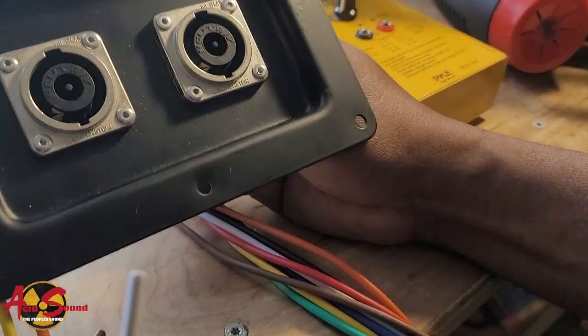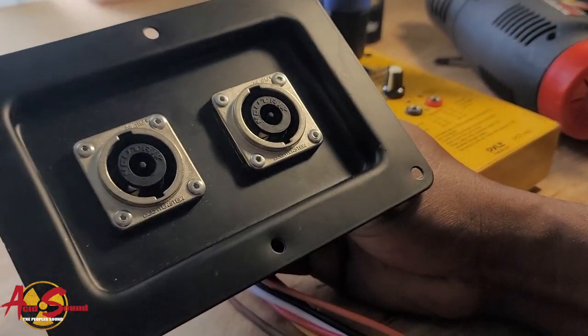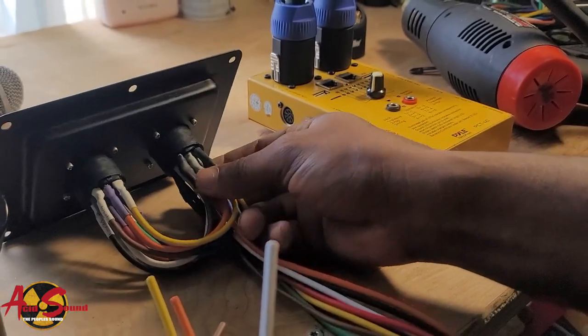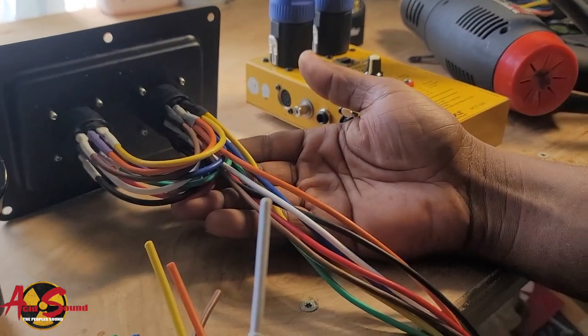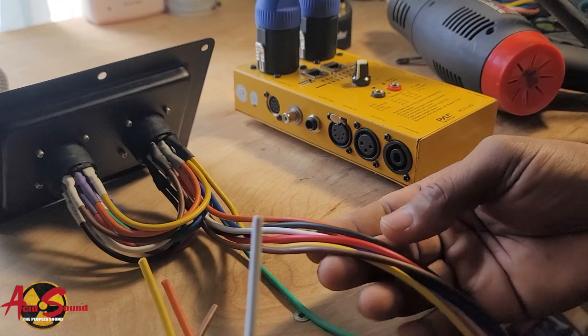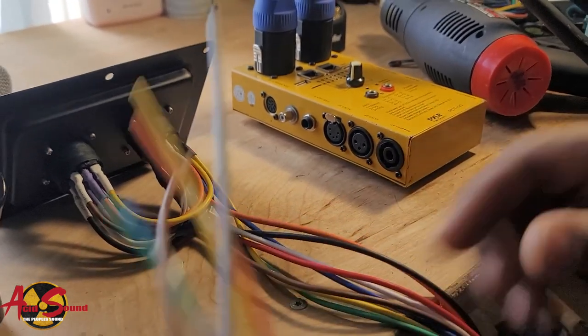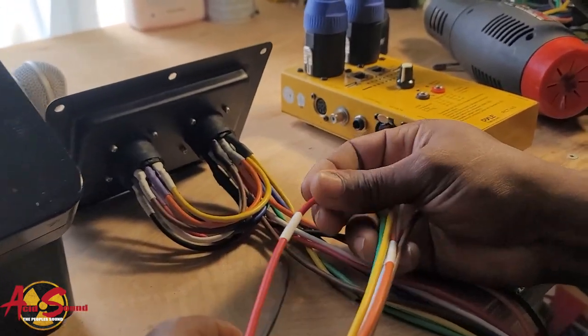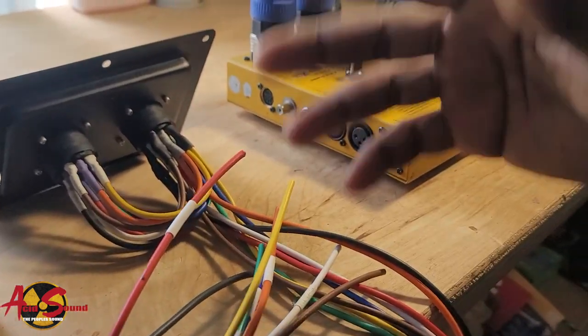All right, people. So this is the 8-pin plate that I do for the cabinet with the tweeter, horn, 12-inch, 15-inch. These are eight wires and this one I'm done, that's what it looks like. And just in case some people are like, 'I can't figure out the colors,' I do them just like this with extra precaution.